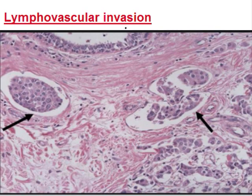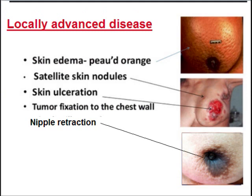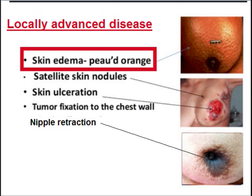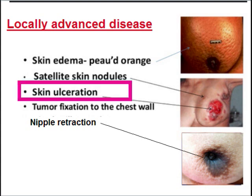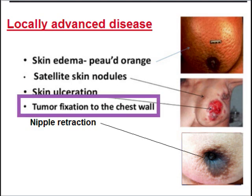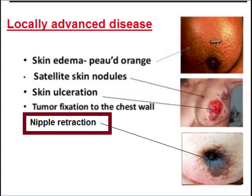Another factor is presence of lymphovascular invasion — presence of tumor emboli inside the vessels, lymphatics, and blood vessels. Locally advanced disease is also a bad prognostic factor. Signs include skin edema, peau d'orange appearance, satellite skin nodule, and multicentricity of the tumor.